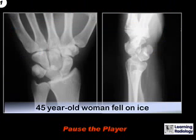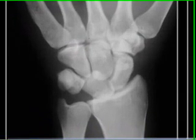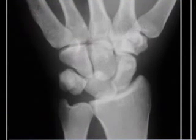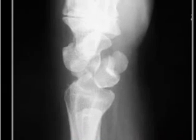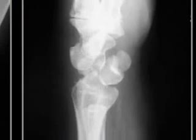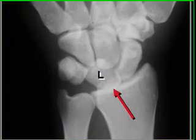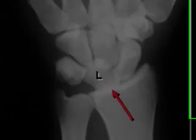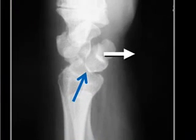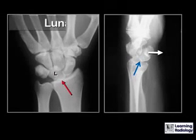The first case is a 45-year-old woman who fell on the ice. If you noticed that the lunate in the frontal projection had a triangular rather than a quadrilateral shape, and in the lateral projection the lunate was dislocated in a volar position and no longer articulated with the radius (the blue arrow), then you would have seen that this is a lunate dislocation.